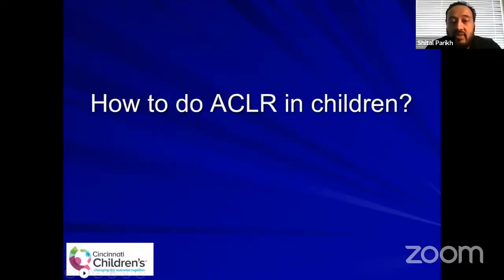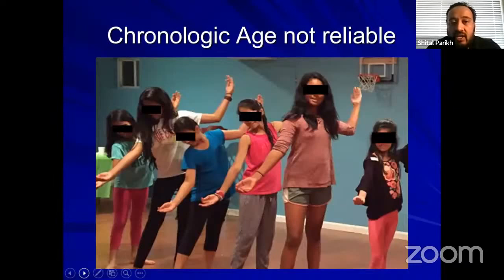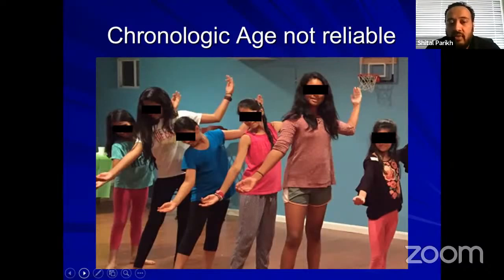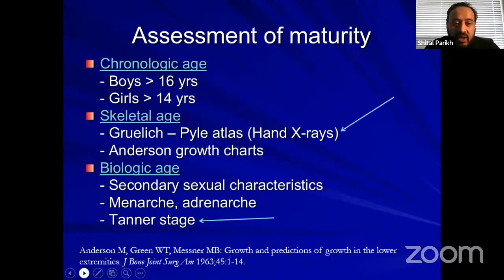How do we do ACL reconstruction in children? First we want to assess how much growth is remaining. If you look at girls who are all 11 years old, chronological age is not a reliable indicator because the growth remaining differs between them. There are several ways to assess maturity. One is Tanner staging, which has been published quite a bit, but in the hands of an orthopedic surgeon, Tanner staging accuracy is less than 60% and it's difficult to perform in a clinical setting.